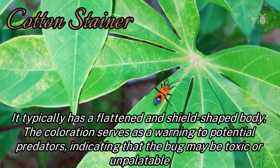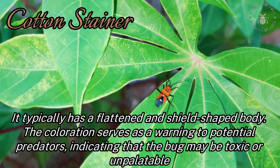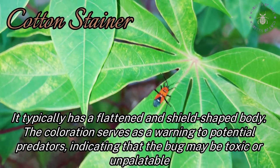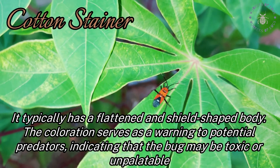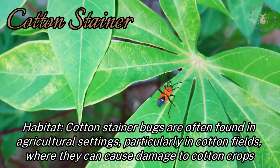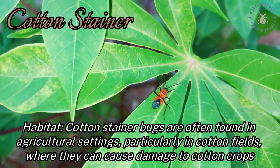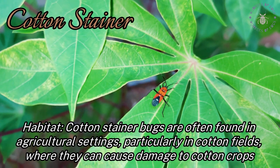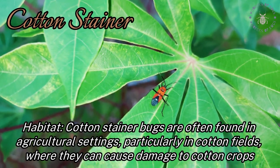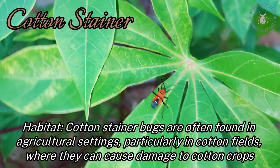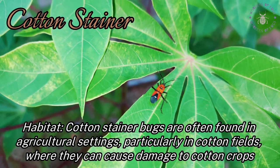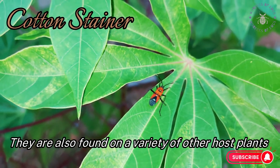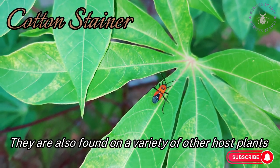The coloration serves as a warning to potential predators, indicating that the bug may be toxic or unpalatable. Cotton stainer bugs are often found in agricultural settings, particularly in cotton fields, where they can cause damage to cotton crops. They are also found on a variety of other host plants.